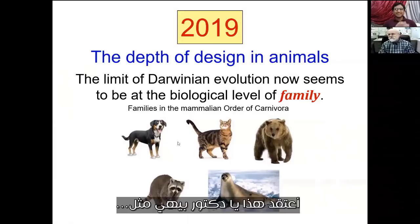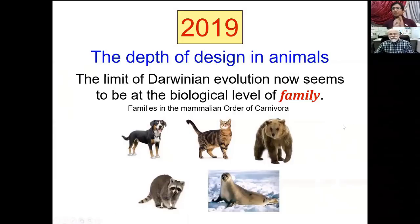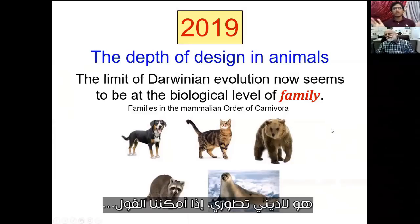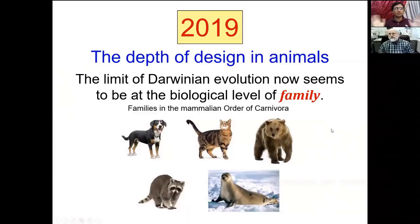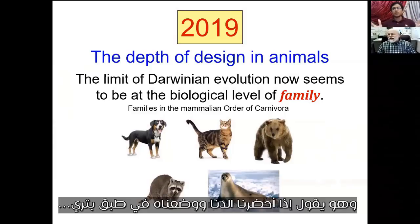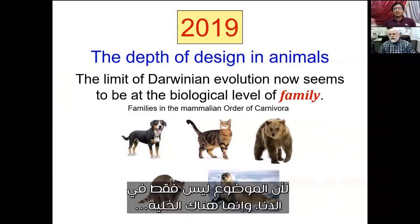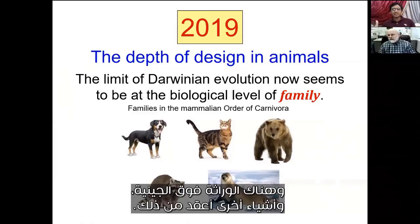This reminds me of Dr. Dennis Noble — he is a non-religious evolutionist, not a Darwinist. He says that if we just bring DNA and put it in a petri dish for thousands of years, nothing will happen. Because it's not just about DNA; it's about the cell, it's about the epigenetics — it's more complex than this.